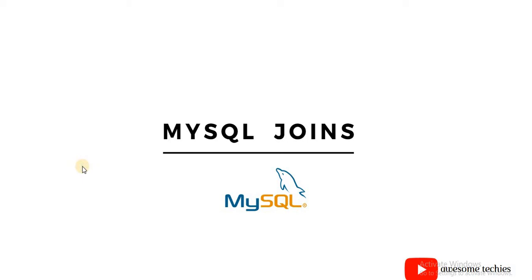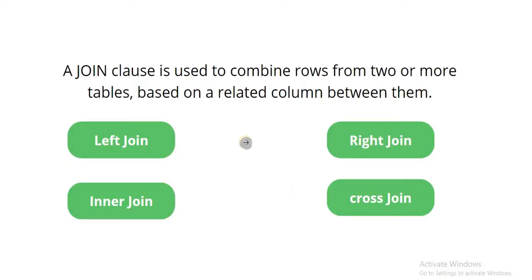Hello guys, welcome to MySQL learning series. In this video we will see MySQL joins. Join is a clause used to combine rows from two or more tables based on the related column between them. Do table mein se rows combine karne ke liye use kiya jata hai depending upon the matching column from both tables. Kam se kam ek column same hona chahiye tabhi hum join use kar sakte hai.